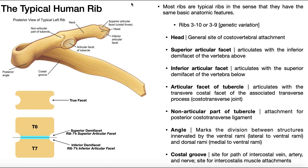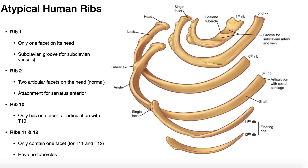Welcome back to Anatomy and Physiology on Catalyst University. In this video, we're going to be discussing the anatomy of the typical human rib and how that actually differs from the atypical human ribs.